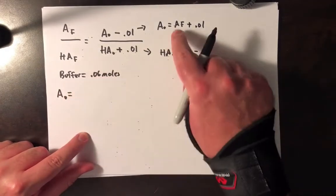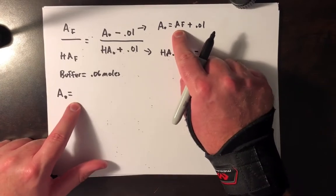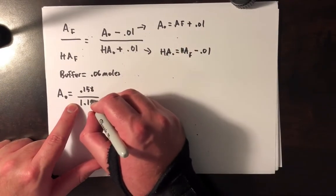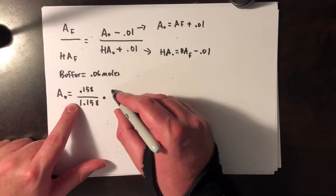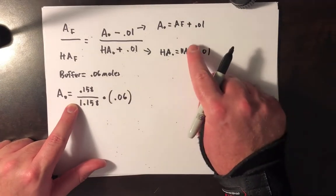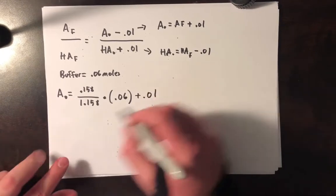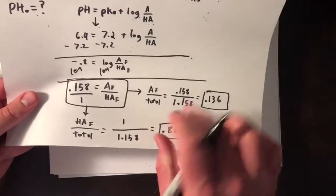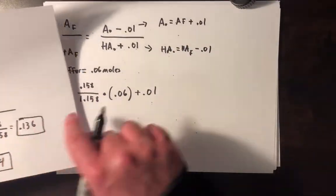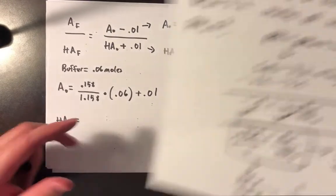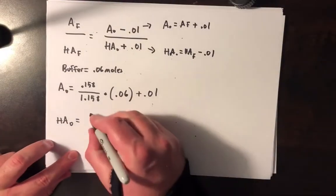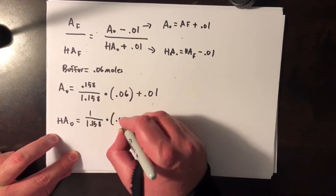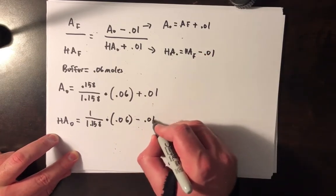So let's go ahead and calculate A⁻ naught is equal to A⁻ final. Again, we said that the relationship for the final was 0.158 for the final, divided by the total, 1.158. In this case, I'm going to multiply this by the number of moles, 0.06. And I'm going to have to add to it 0.01. I now have HA initial. You know what? I'm being super ridiculous here because I've already calculated these ratios. I'm just going to write it out like this, but you can go ahead and just round it using those ratios that I've given you. But this is 1 divided by 1.158 multiplied by 0.06. We said that was minus 0.01. Okay.